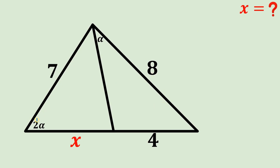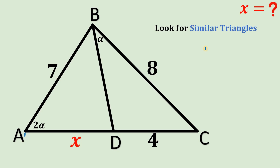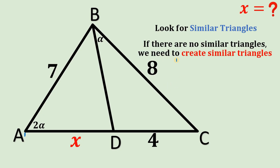To answer this question, we're going to name some important points in this figure. This point is A, this point is B, this is C, and this is D. We'll look for similar triangles — that's one method. But looking at this figure, we don't have any similar triangle. So what we're going to do is create a similar triangle. We need point D, so let's create point E on BC such that this angle is also equal to alpha.